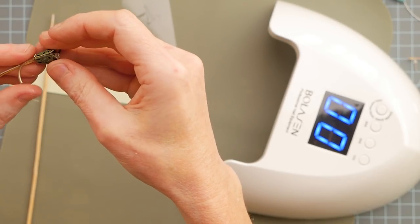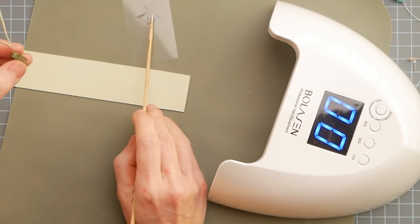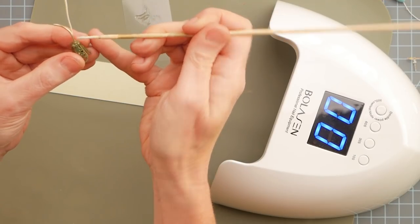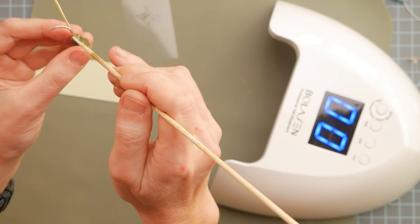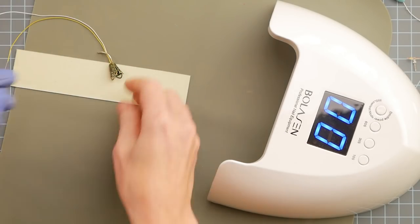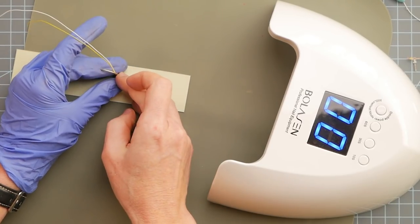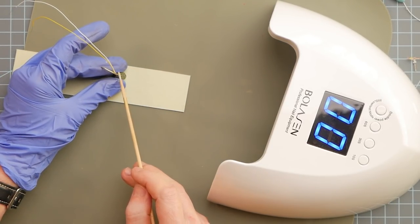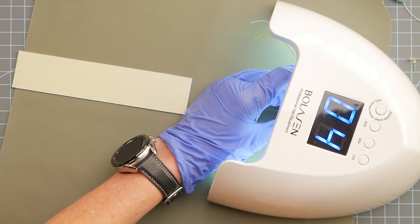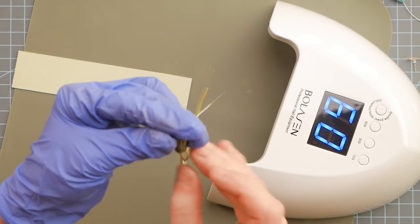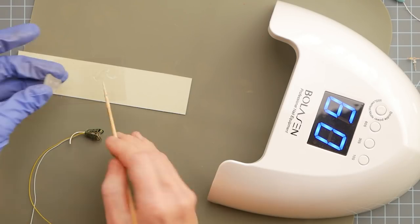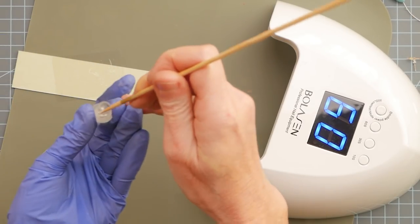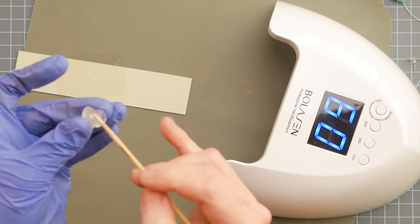And then I'm going to take the skewer and paint some of that UV resin around the edge just to secure everything and pop that in the lamp with a gloved hand. Voila, so great. Now I'm going to take that little resin shade that I made out of my homemade mold.